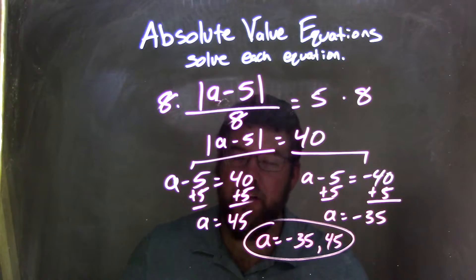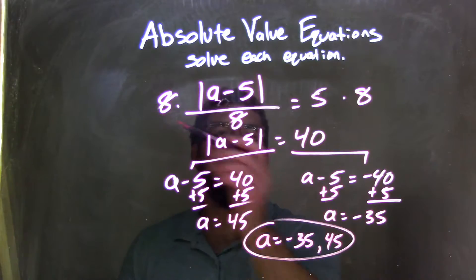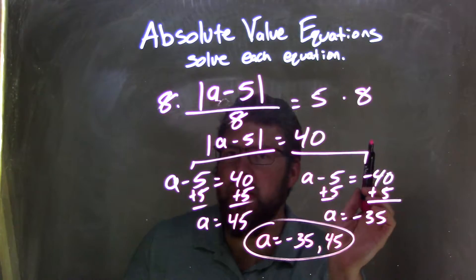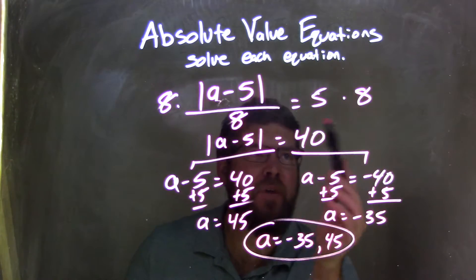Let's recap. This is a tough one. Absolute value of a minus 5, all over 8, equals 5. I multiplied both sides by 8, leaving me with the absolute value of a minus 5 equals 5 times 8, which is 40.